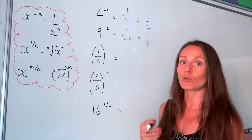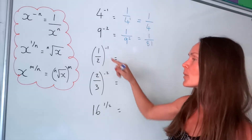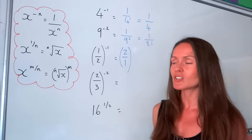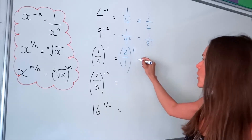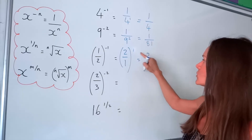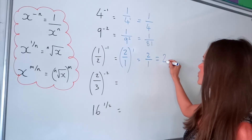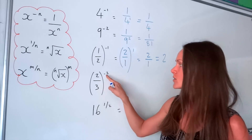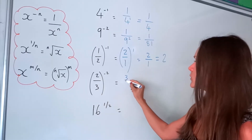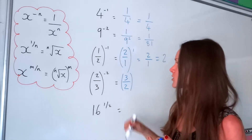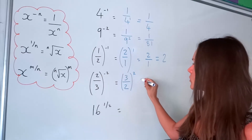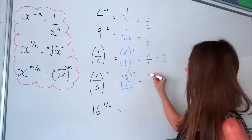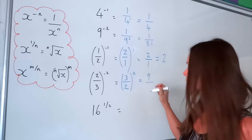If you already have a fraction with a negative power, the negative power turns the fraction upside down. So one half to the negative one becomes two over one with a positive power of one, which is just two. Similarly, two thirds to the negative two flips to three over two, then the power becomes positive two. We square both numbers: three squared is nine and two squared is four, giving nine over four.